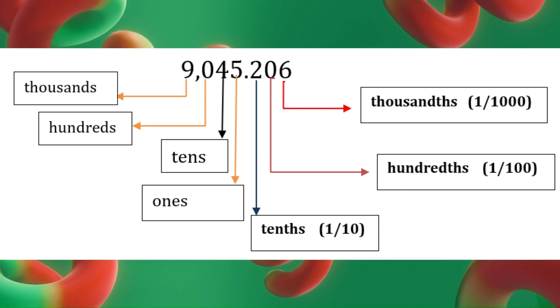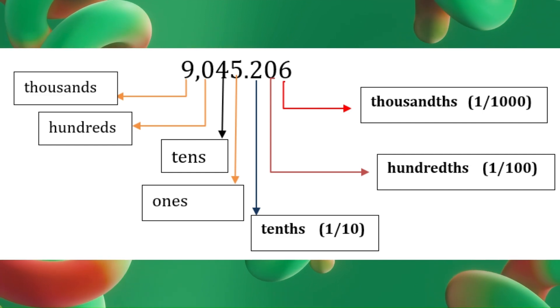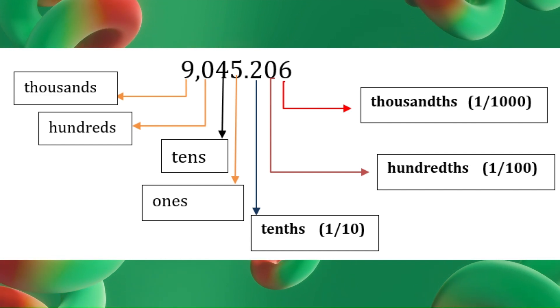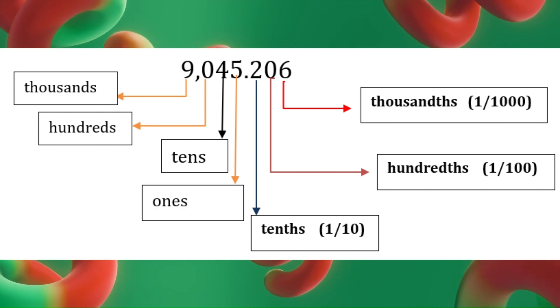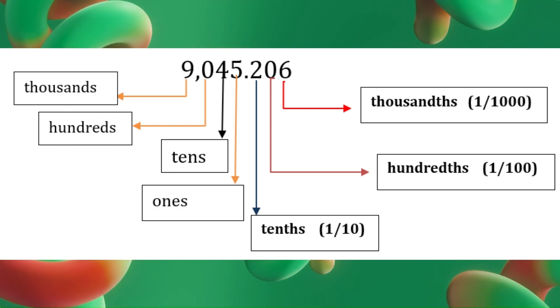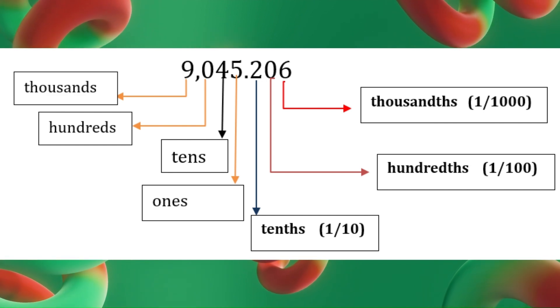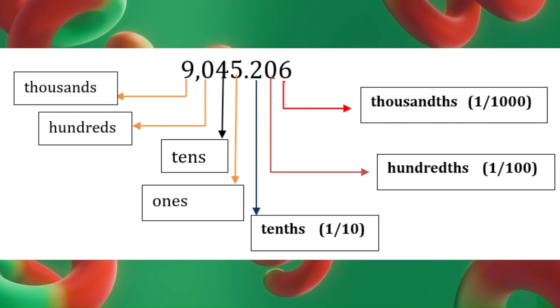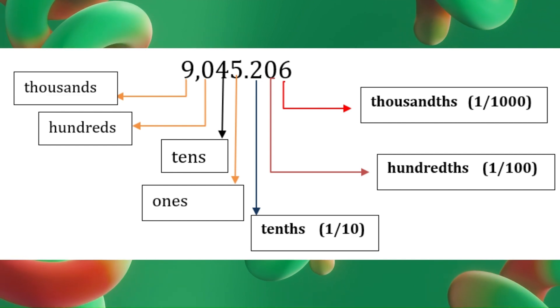After the decimal point: 2 is in the tenths place, representing 0.2. 0 is in the hundredths place, representing 0 or nothing. 6 is in the thousandths place, representing 0.006.